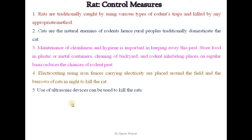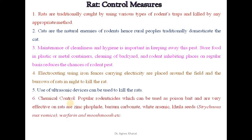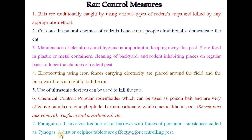Use of ultrasonic devices can also be used to repel rats. Chemically, we can control the rats. Popular rodenticides used as poison bait that are very effective on rats include zinc phosphide, barium carbonate, white arsenic, nux vomica seeds (strychnine), warfarin, and mush mush, etc. Fumigation is also an effective method, involving treating of rat burrows with fumes of poisonous substances called cyanogas. Dust or capsule tablets are effective for controlling this pest.